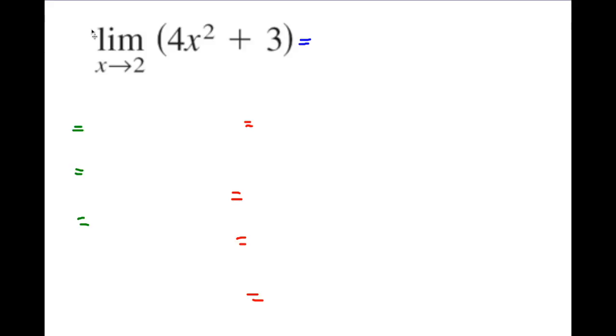So here's our first example, it says the limit of 4x² + 3 as x approaches 2. Well to do that, basically what we're going to do is we're going to say, okay, well using our properties of limits, well this is a sum, so what we can actually do is we can break our sum up into two different terms. So it's the limit of 4x² as x approaches 2, and the limit of 3 as x approaches 2.